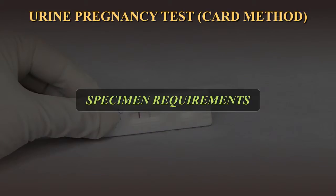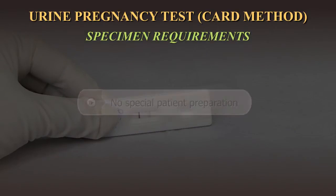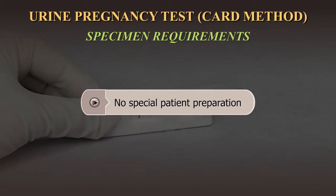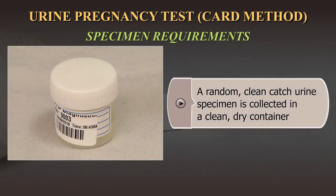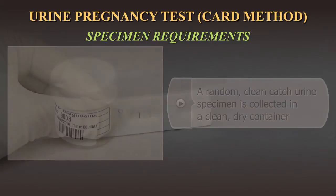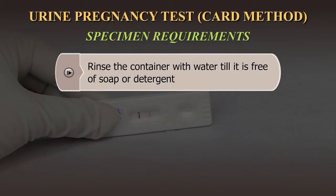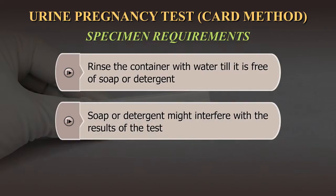Specimen Requirements: No special patient preparation is necessary for this procedure. A random, clean-catch urine sample is collected in a clean dry container. Rinse the container with water until it is free of soap or detergent, as soap or detergent might interfere with the results of the test.